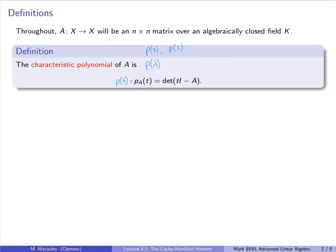You have likely seen either in your introductory course or in my previous lecture the determinant of A minus lambda I instead of lambda I minus A. Now A minus TI and TI minus A just differ by negative 1, so the determinant of TI minus A is just negative 1 to the n times the determinant of A minus TI. That's going to be either plus or minus the original determinant, depending on the parity of n. I'm going to use this convention because I want this to be a monic polynomial.